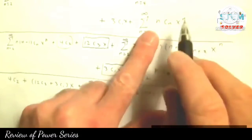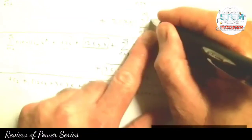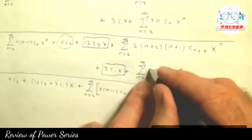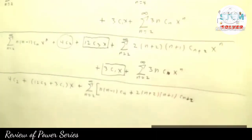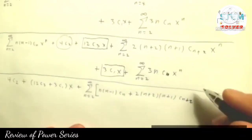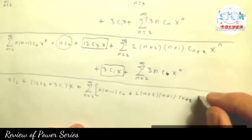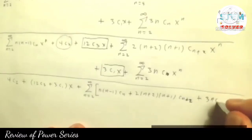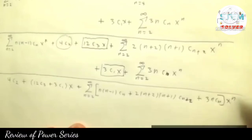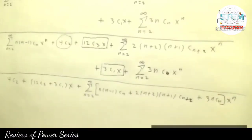I just noticed something — everyone see right here, there should be a 3 right here. That's why I need different colored pens. There should be a 3 there, and then of course down here there should be a 3 here as well. So then the last term in the series is 3ncn, and outside we have x to the n. Okay, that's the answer for this problem.